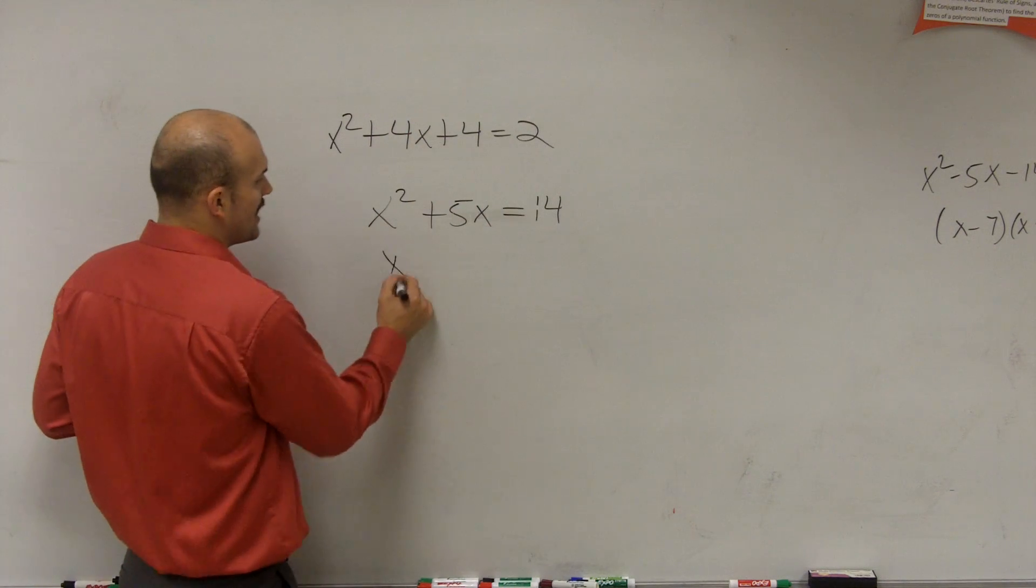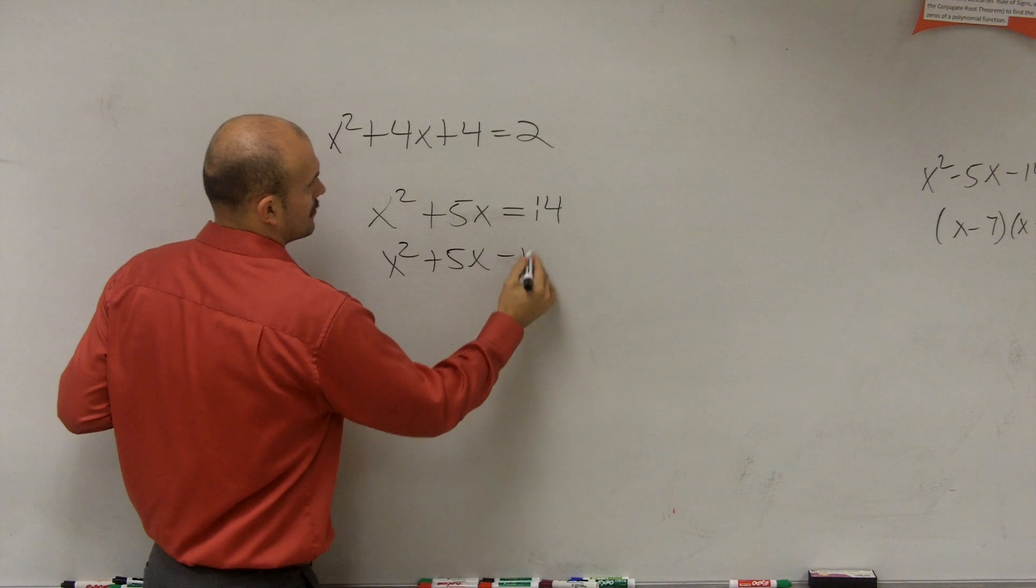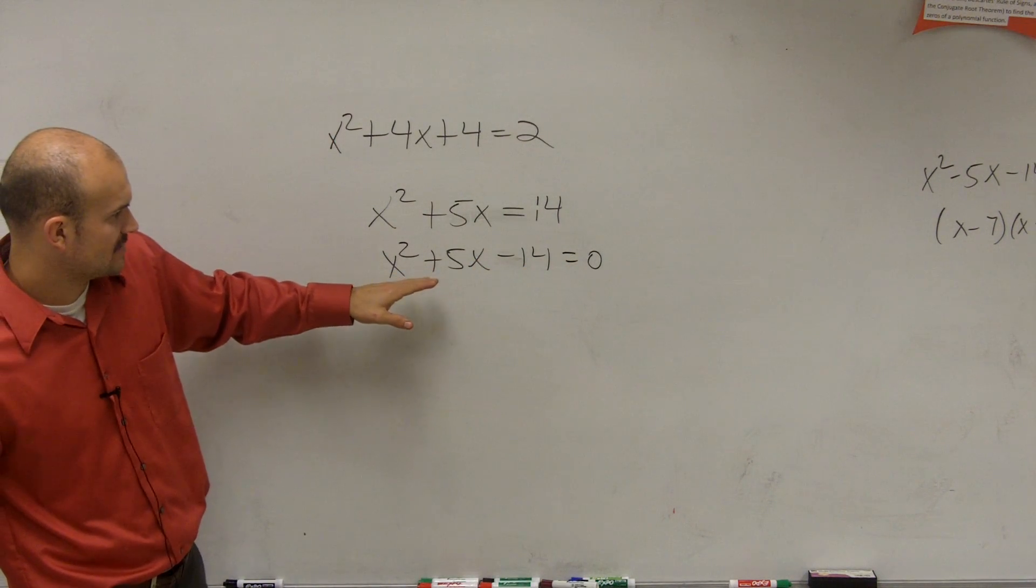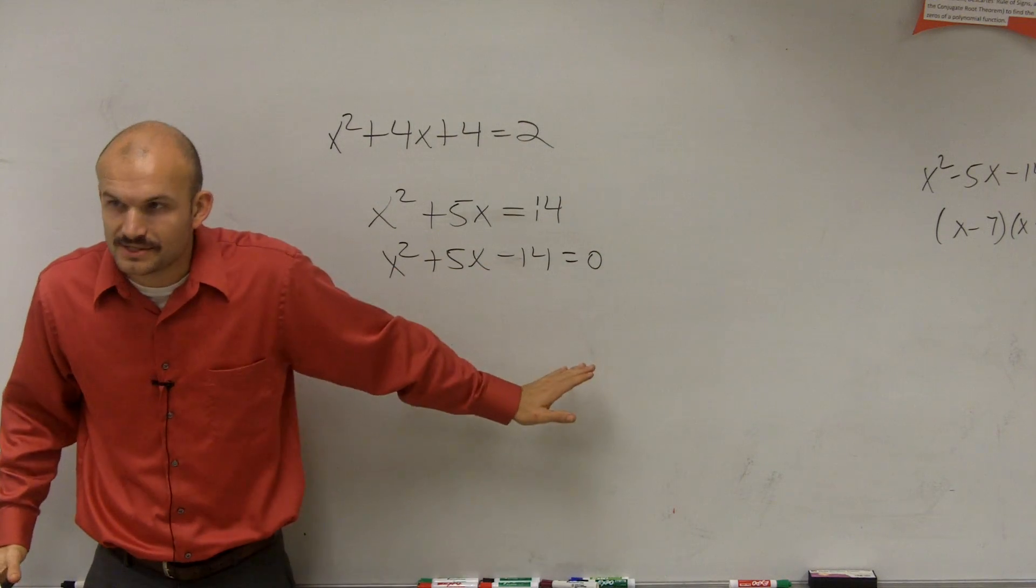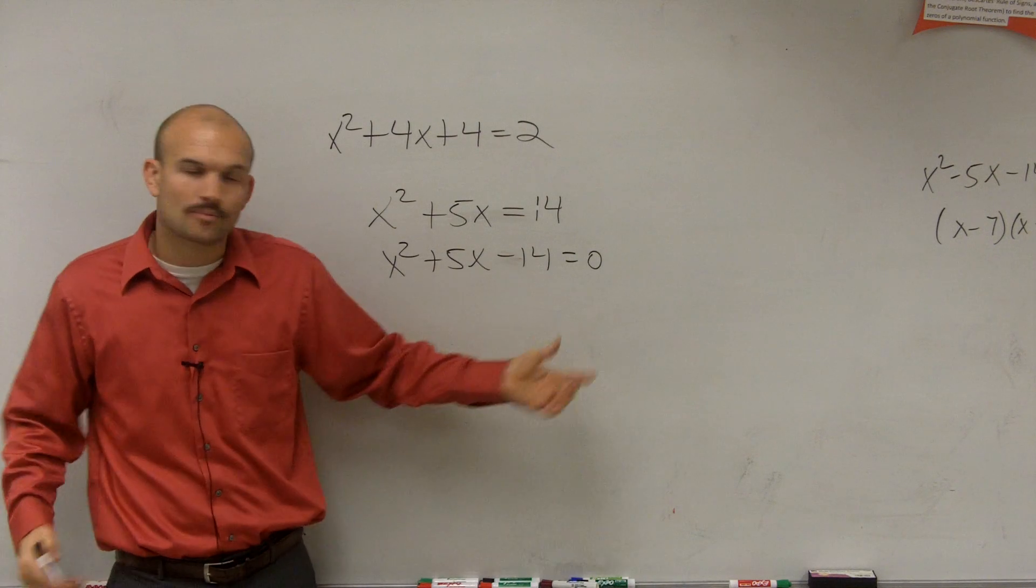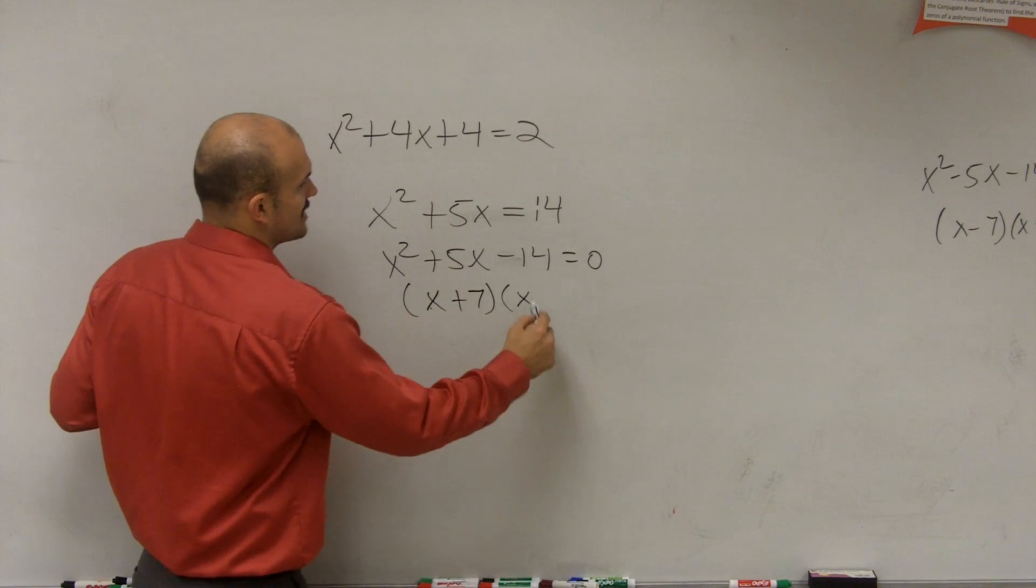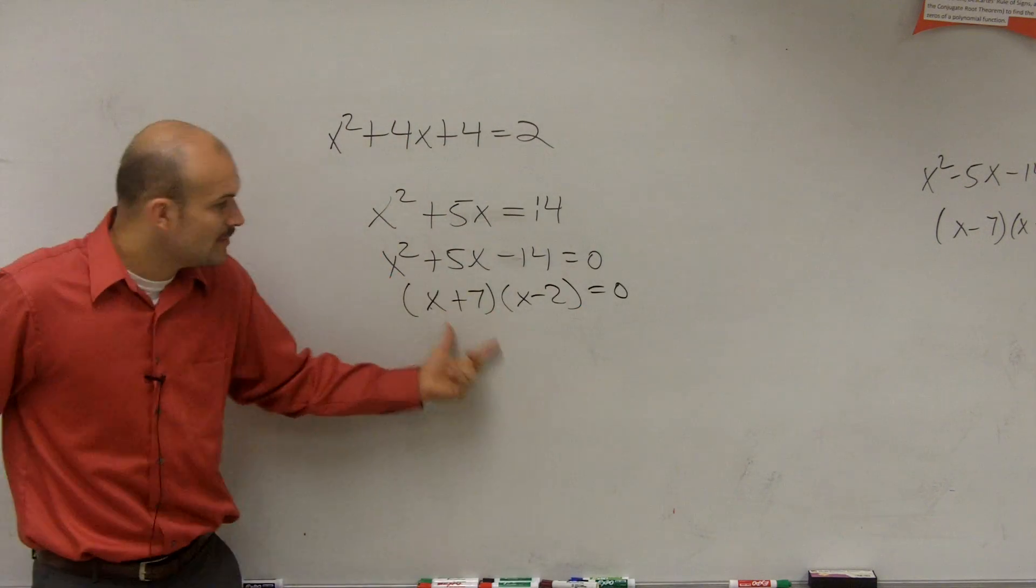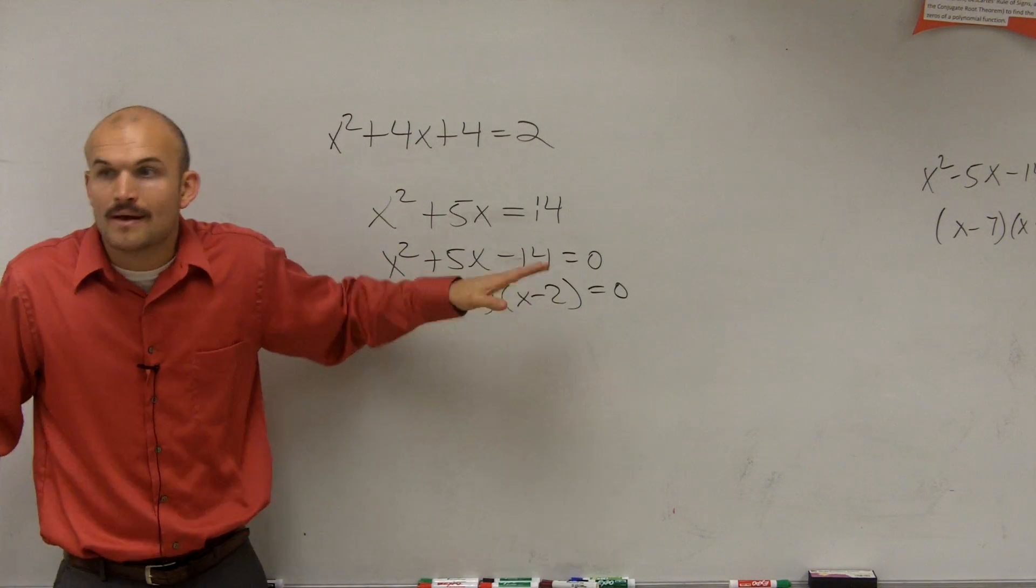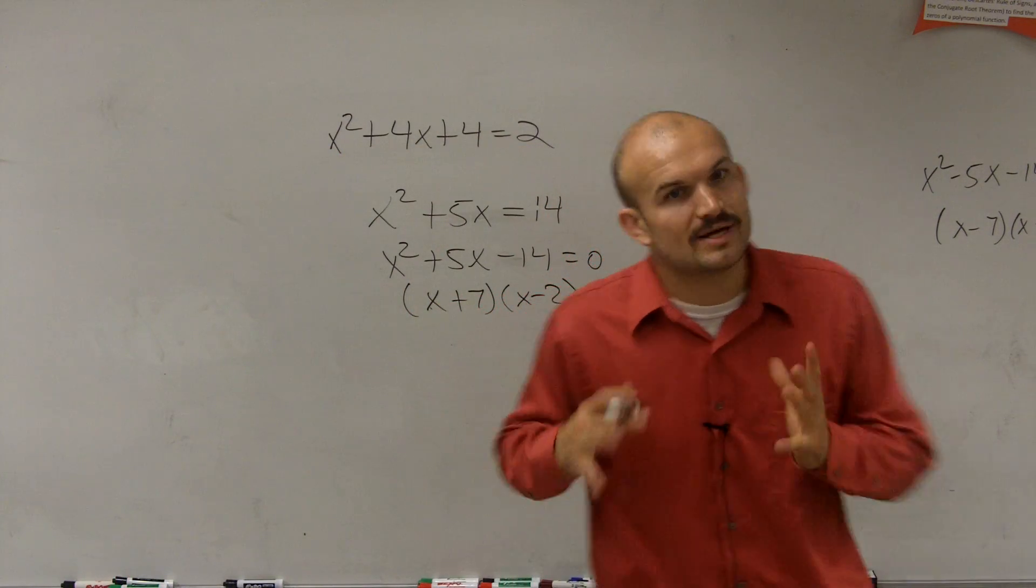And the reason why is because when we learned to factor, what we had to do is we had to set it as a zero product property. So we do our factor. We'd say x plus 7 times x minus 2 equals 0. Only when we had this point could we say this equals 0 or this equals 0 by the zero product property. It is essential that you guys understand this, Sam, that you guys understand.